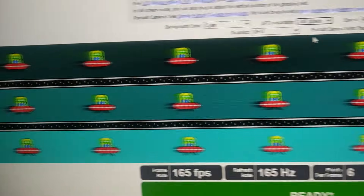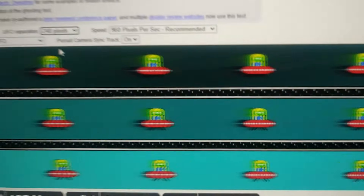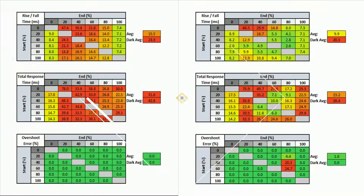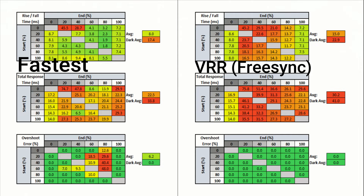About overshoot error: overshoot is about showing artifacts on your screen when you've made things higher than they should be in your monitor settings. It's noticeable when the overshoot error is higher than 10%. As long as you're under 10%, you're okay and you really won't notice anything. For my case, I have it at 6% with the fastest option.